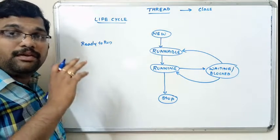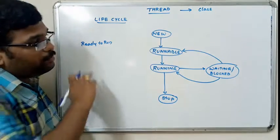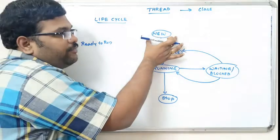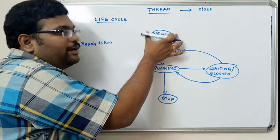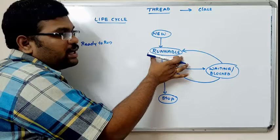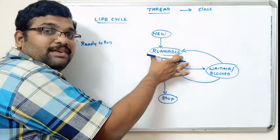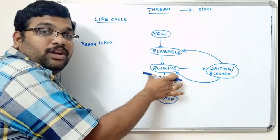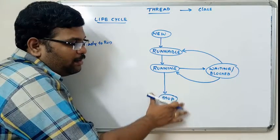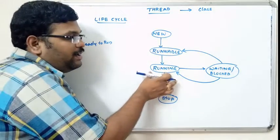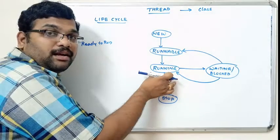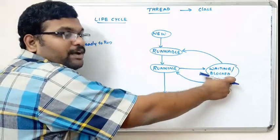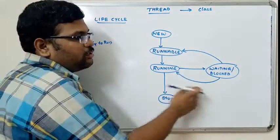From creation to termination, the thread moves through five different states: when created it is in the new state; when ready to execute it moves to runnable state; when the processor is available and the thread is allocated, it moves to running state; after completion it moves to the stop state; and if any I/O or other interruptions occur during running, it moves to the waiting or blocked state, then returns to the runnable or running state.